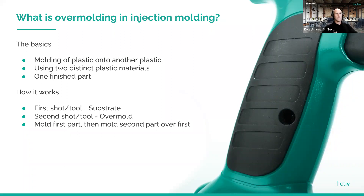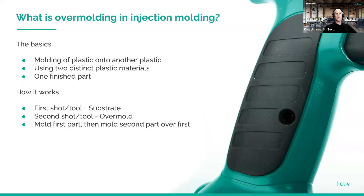A cell phone case is a great example of an overmolded part — with buttons and a rubber outer edge. The process uses one mold to produce the rigid plastic part and a second mold for the overmold operation, resulting in one finished complete part made from two different materials.